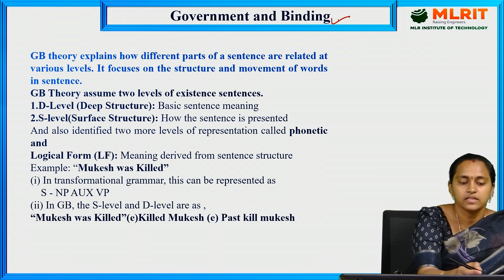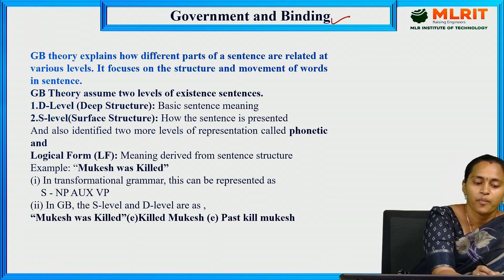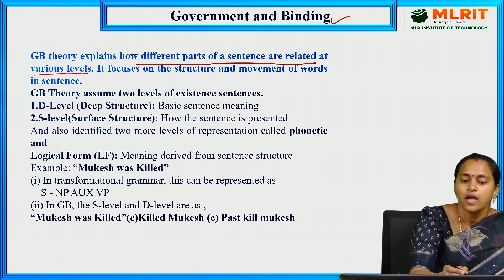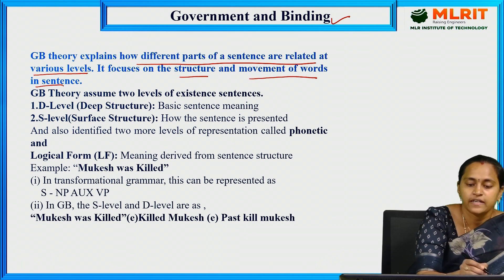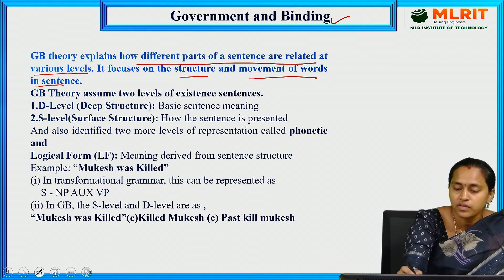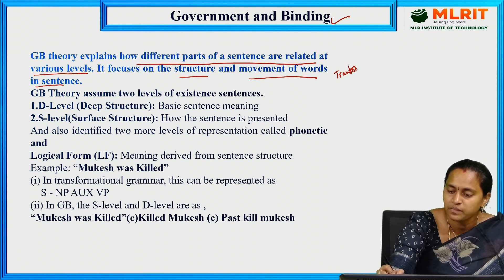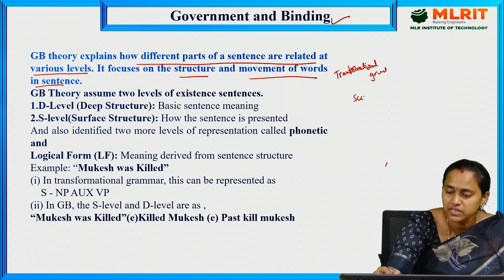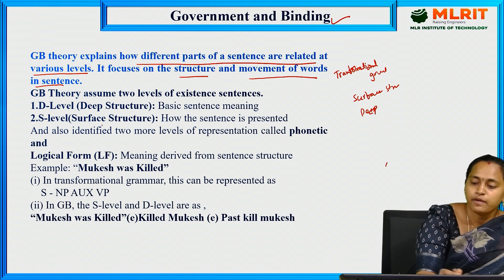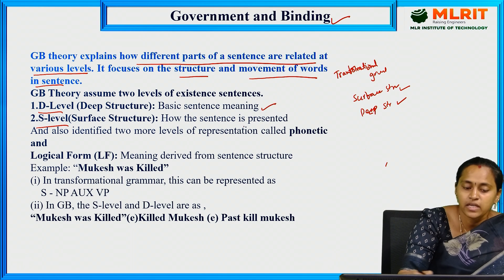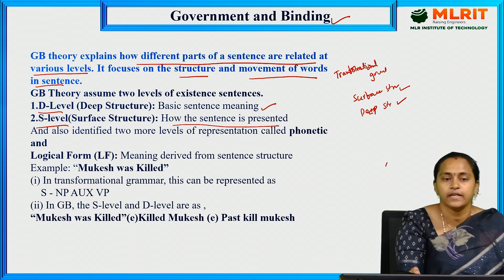Next is Government and Binding Theory, an important framework that explains how different parts of a sentence are related at various levels, focusing on the structure and movement of words. In Transformational Grammar, we have two levels: surface structure and deep structure. Government and Binding renamed these to S-level (how the sentence is presented) and D-level (basic sentence meaning). Based on these, two more levels of representation are identified: phonetic form and logical form.